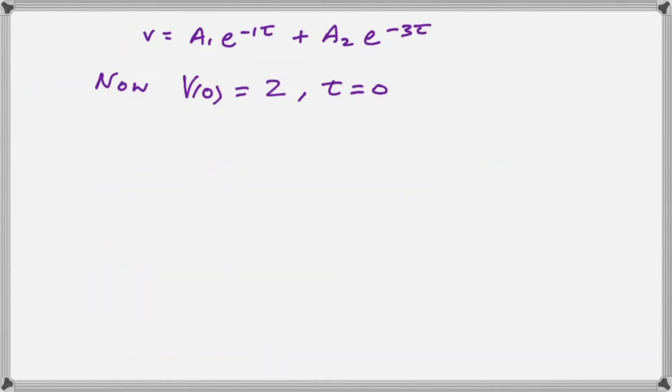So the next stage is to realize that one of our initial conditions is that v is two volts at t equal to zero. So that makes it easy as you can see because you look at our solution, we set v to two and then what do we have?